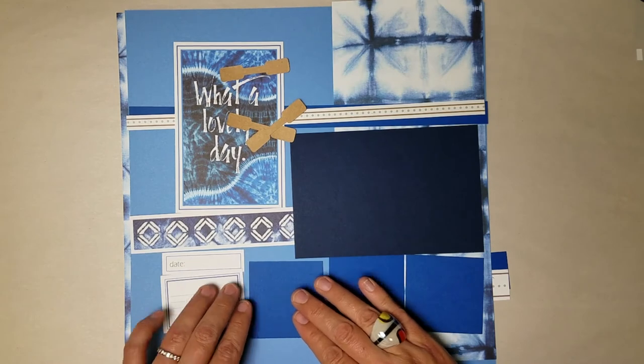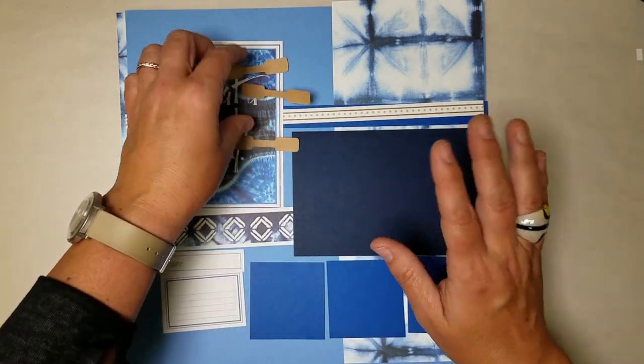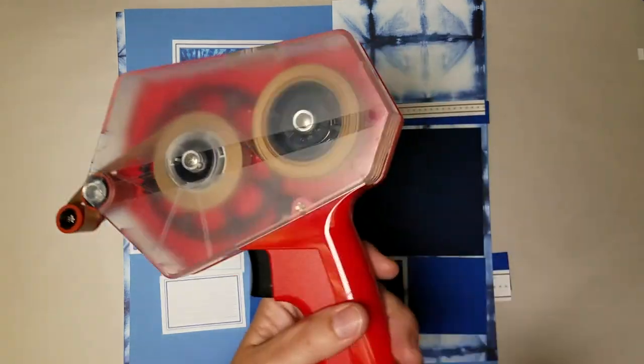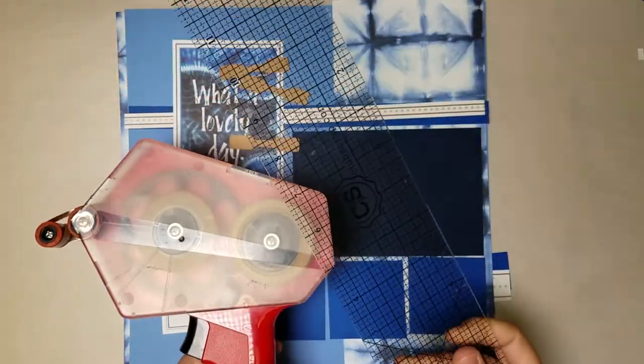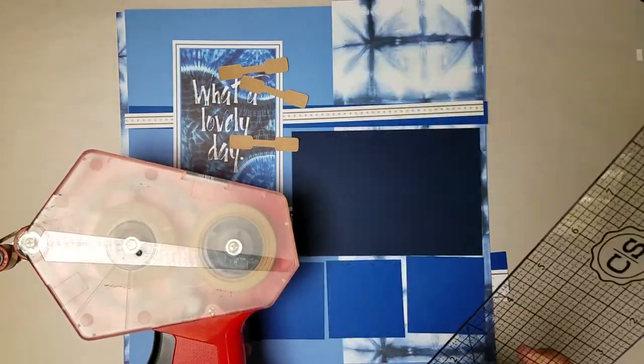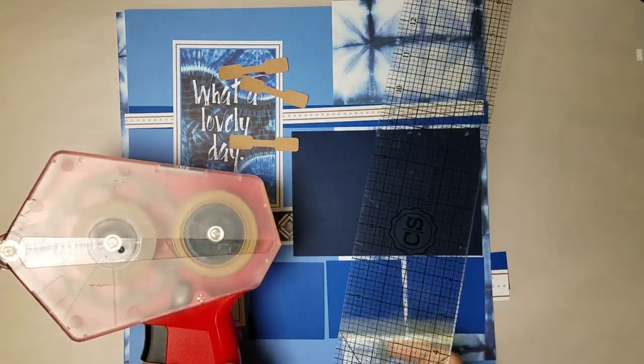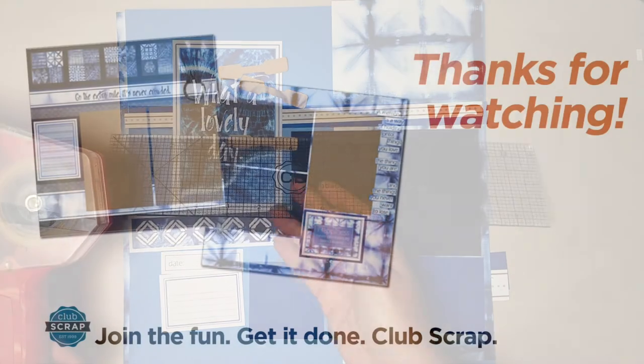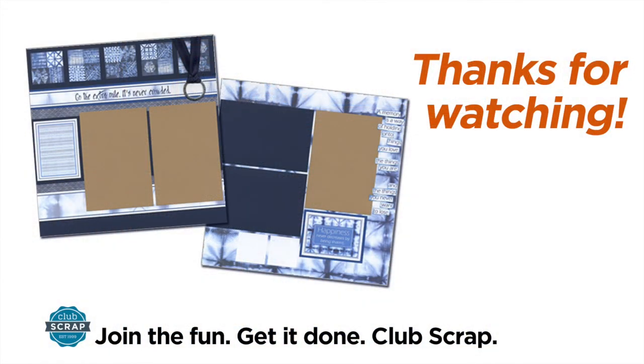That, my friend, is the Shibori collection. All the trimming, all the placement. All you have left to do is grab your adhesive and, of course, your trusty 3x14 grid ruler and put everything in its place, add your pictures, and you're good to go. Thanks for joining me for the Shibori page kit tutorial. Have a good one.